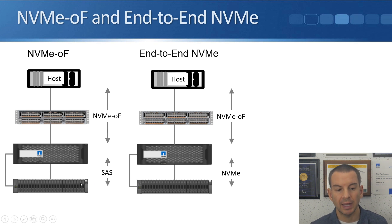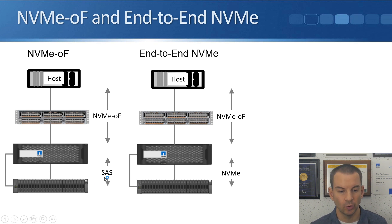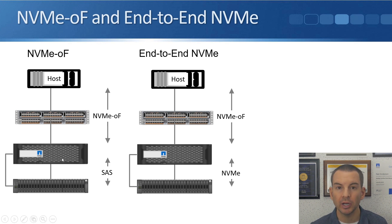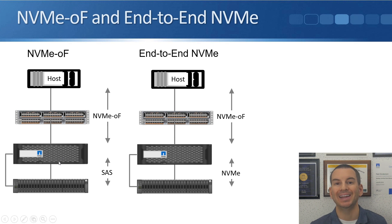Once the traffic hits the storage system, getting from the storage system to the disks is using traditional SAS. You can do that in ONTAP since version 9.4, and it just needs to be an AFF system running ONTAP 9.4 or later.